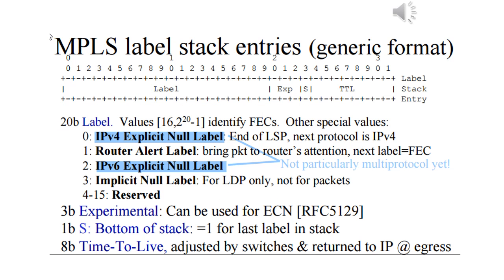This slide shows the general format of MPLS label stack entries. The label has 20 bits, 3 bits for future use, 1 bit for the last label in the stack, and an 8-bit TTL which is adjusted by switches and returned to IP at egress.